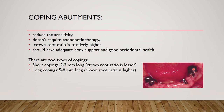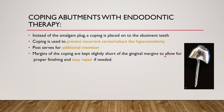Coming to coping abutments: these abutments have copings placed on top, which reduces sensitivity. Endodontic treatment may not necessarily be required since the tooth is covered with a coping — though this is debatable. The crown-root ratio is relatively more favorable. The tooth should have adequate bony support and good periodontal health. Copings are of two types: short coping (2–3 mm) and long coping (5–8 mm).